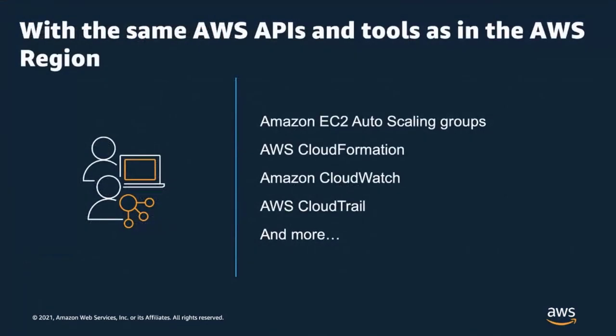Apart from local services, all AWS tools work in these Local Zones as well. API calls are automatically logged via CloudTrail, and you can continue to use familiar AWS services like CloudFormation, Identity and Access Management, and Auto Scaling to manage, secure, and scale your applications. You can also access AWS services such as DynamoDB, S3, and others in the parent region in the same way as you do in regions today.